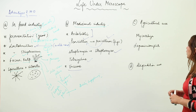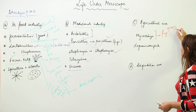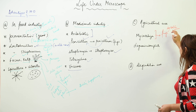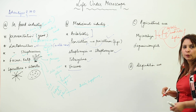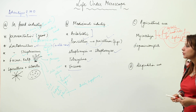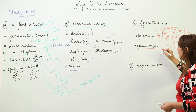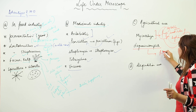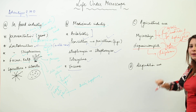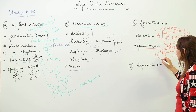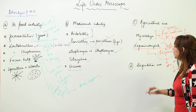Third, microorganisms have agricultural uses. Mycorrhiza is a symbiotic association of fungus with the roots of higher plants, where the fungus helps plants absorb water and minerals and in return the plant provides food to the fungus. Additionally, leguminous plants have Rhizobium bacteria in their root nodules — another symbiotic relationship — where Rhizobium converts atmospheric nitrogen into nitrogen compounds that it provides to the plant.